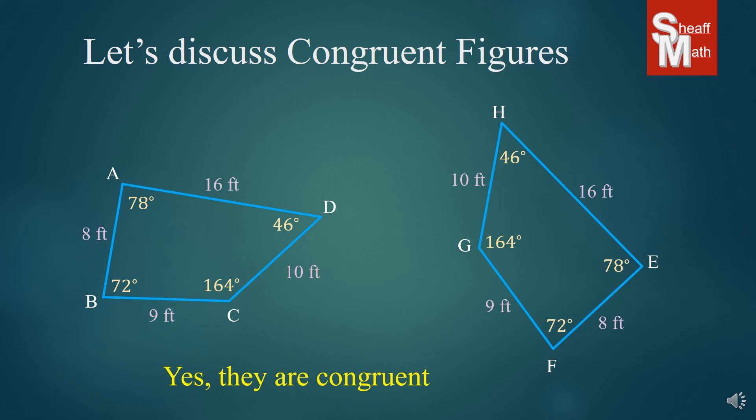I want you to start on the left side where it says 8 feet between A and B, and name all of the sides going clockwise around the shape: 8 feet, 16 feet, 10 feet, and 9 feet. Now do the same thing on the right side: 8, 16, 10, and 9 — but do you notice these are going counterclockwise? What happened is this is a reflection. And reflections are congruent. They might be mirror images of each other or opposite, but all of their corresponding sides match. They are congruent. So reflections are congruent.